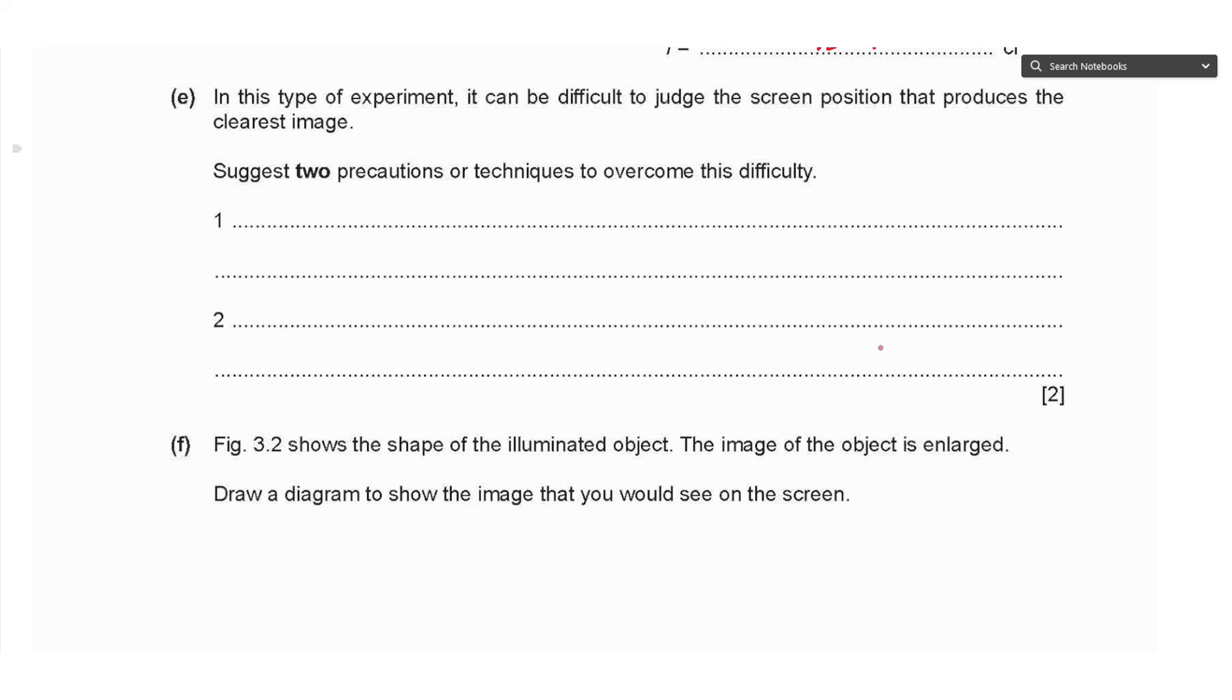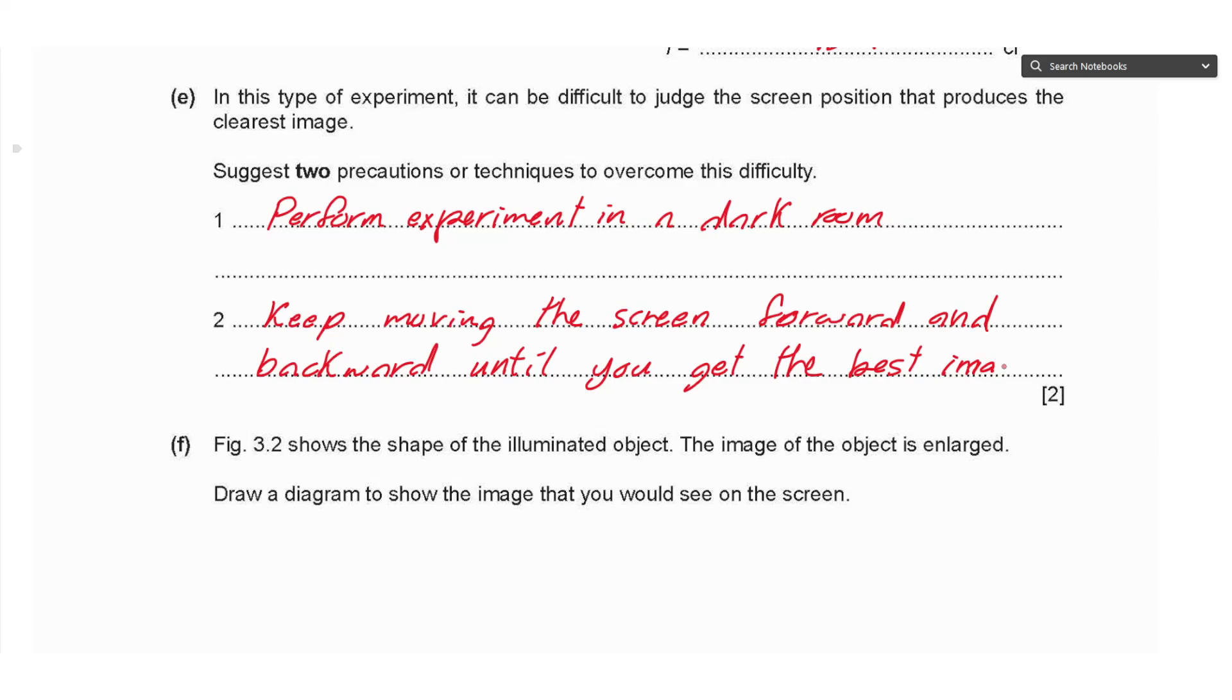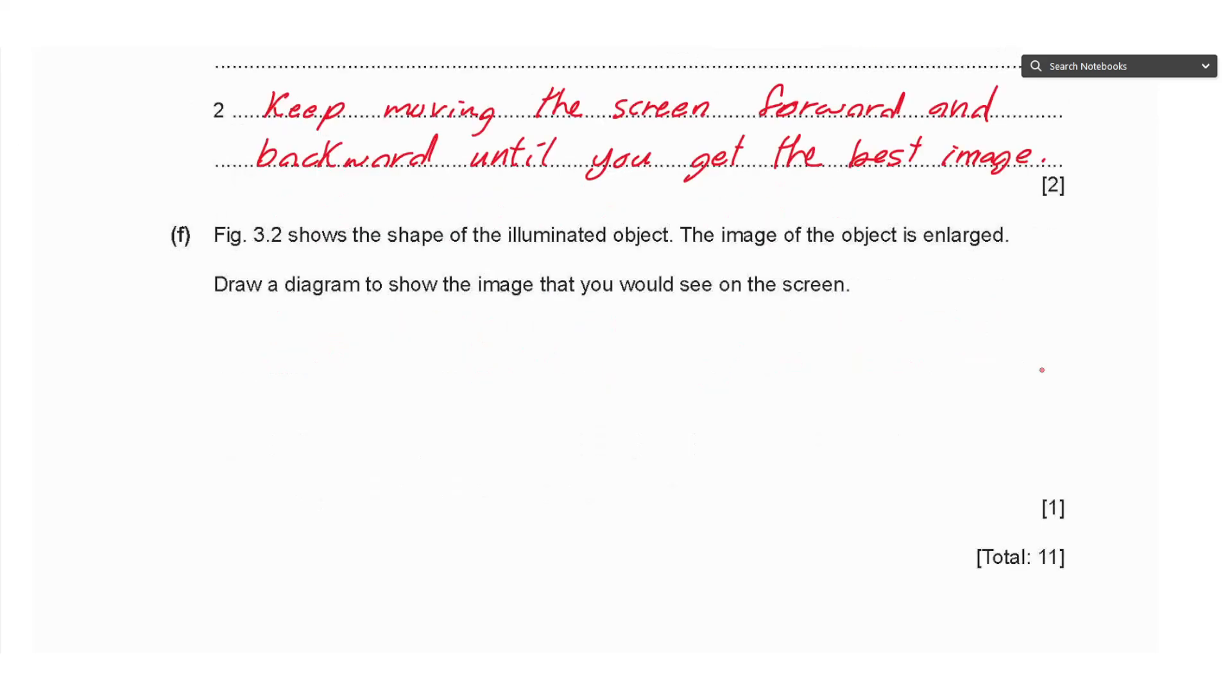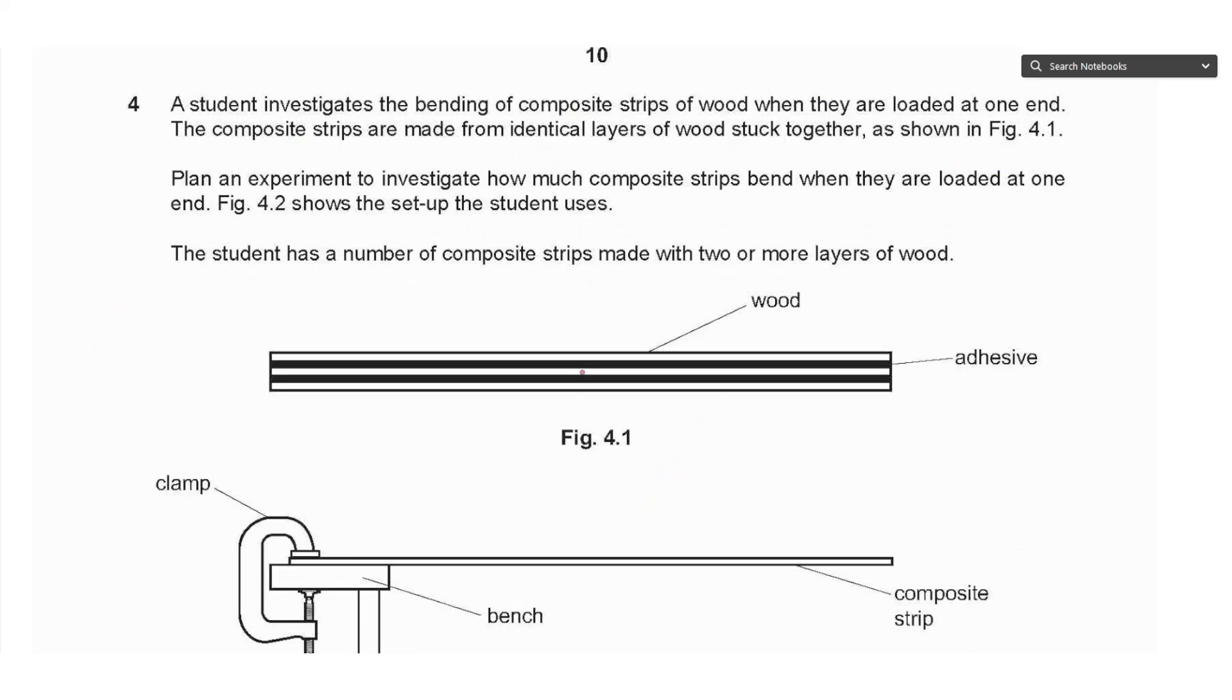Suggest two precautions or techniques to overcome this difficulty. We can say perform the experiment in a dark room, or we can say keep moving the screen forward and backward until you get the best image. Part F says Figure 3.2 shows the shape of the illuminated object. The image of the object is enlarged. Draw a diagram to show the image you would see on the screen. If the object was a triangle pointing upwards, the image should be inverted—triangle pointing downwards—and we draw it larger than the original shape since the image is enlarged.